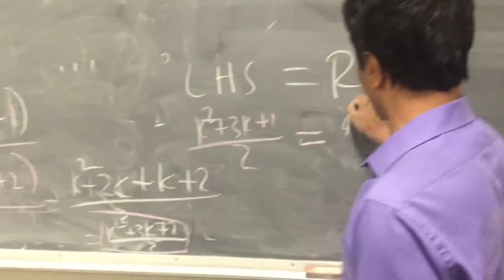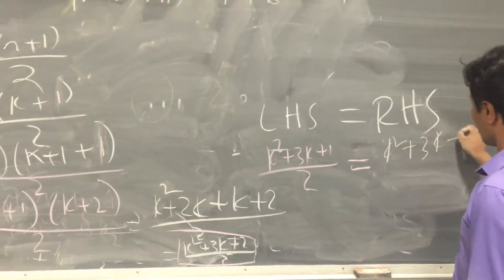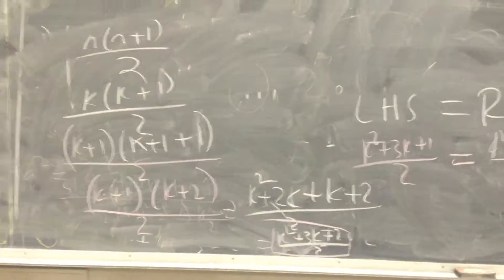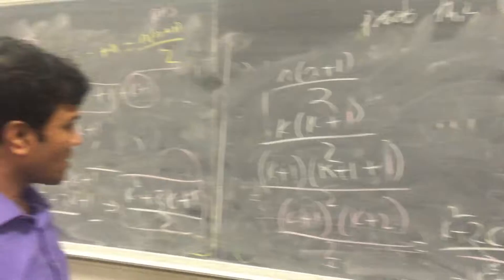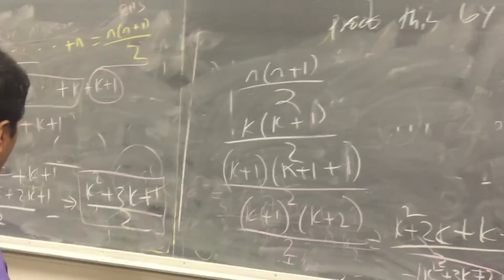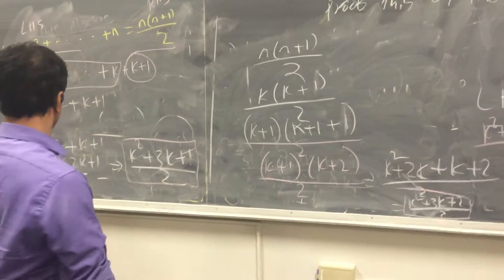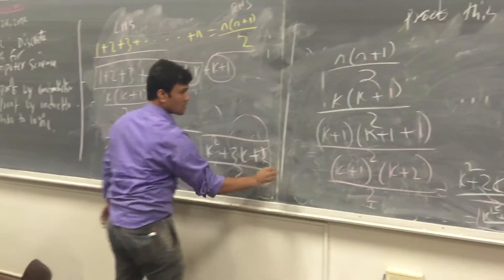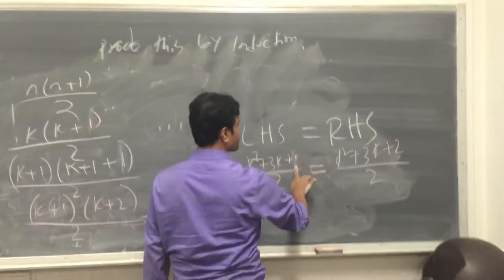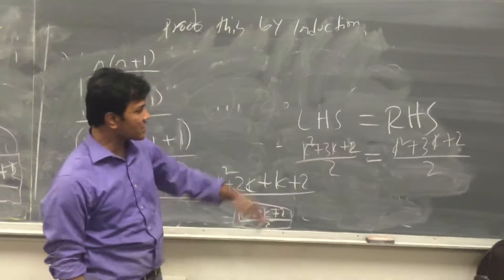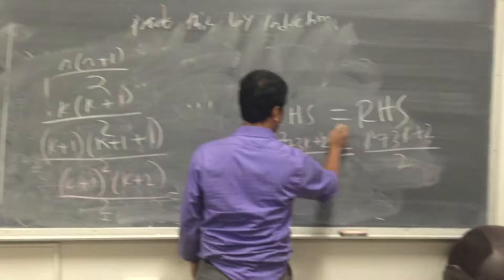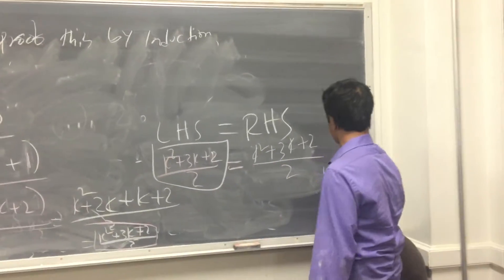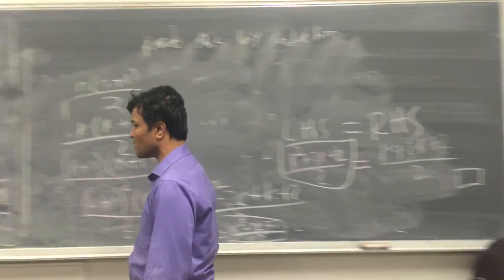The right-hand side is k squared plus 3k plus 2 over 2. So our left-hand side is equal to our right-hand side — k squared plus 3k plus 2 over 2 equals k squared plus 3k plus 2 over 2 — so we have proved it.